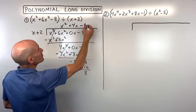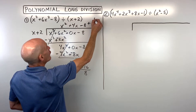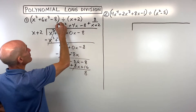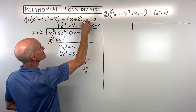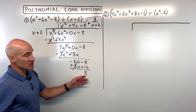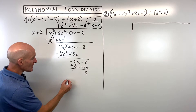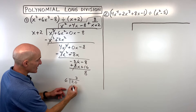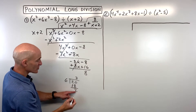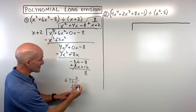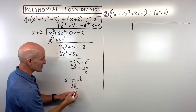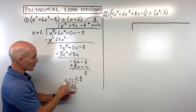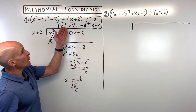We put the remainder over the divisor. That represents your quotient — that's your answer. To give an analogy: if 6 goes into 20 three times, you get 18 and a remainder of 2. Since 2 is less than 6, you write 3 and 2/6, which reduces to 3 and 1/3. You always put that remainder over the divisor. So that's the final answer for example 1.